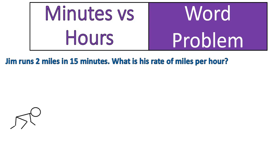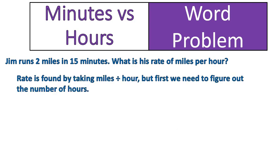This problem might look familiar from my previous video, only now we're converting between minutes and hours. Look at the question: Jim runs two miles in 15 minutes. What is his rate of miles per hour? In our previous video, we just did his rate of miles per minute. Now we have to get him running in miles per hour. Rate is found by taking miles divided by hours.